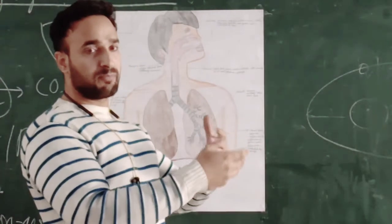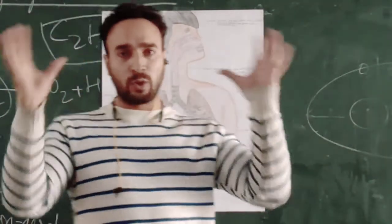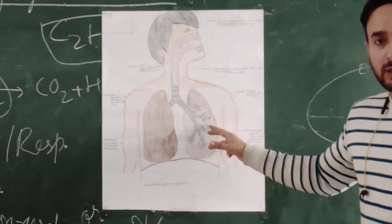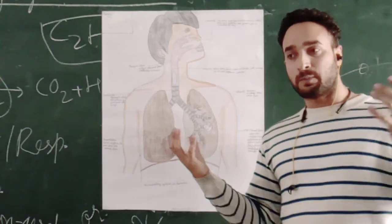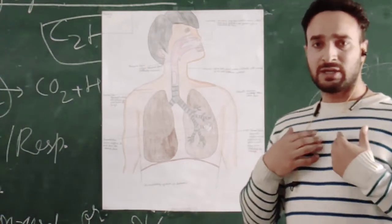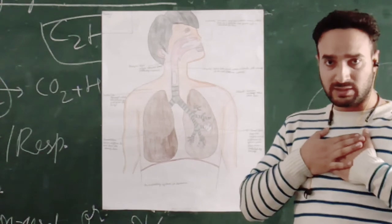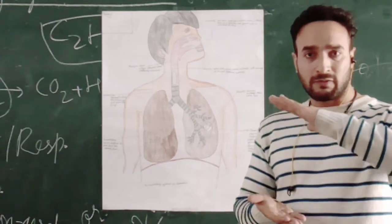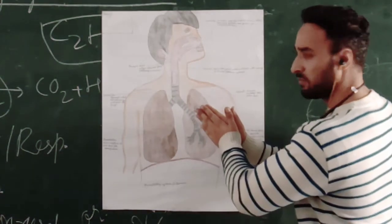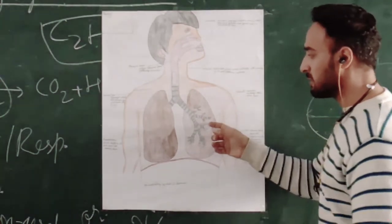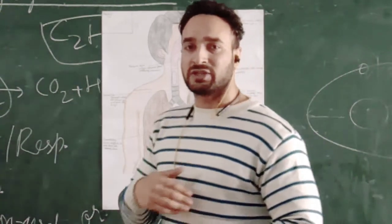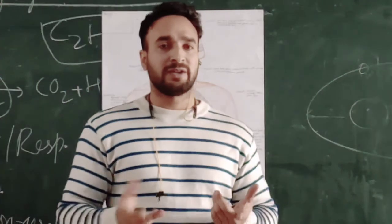When we breathe in, the ribs move upward and outward and the diaphragm moves downwards, creating more space for the lungs, which allows the alveoli to get filled with air and they inflate. During exhalation, the chest pushes downwards and the diaphragm is pushed upwards — both movements compress the lungs, so the alveoli are compressed and the air present in them is exhaled out through the nostrils.